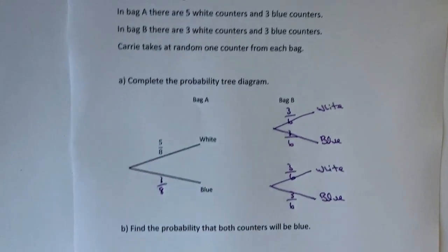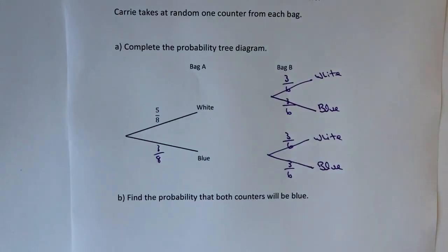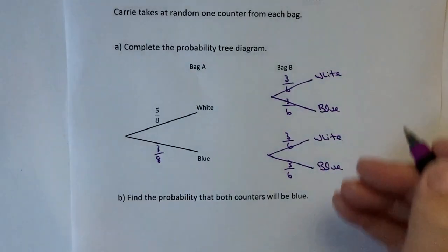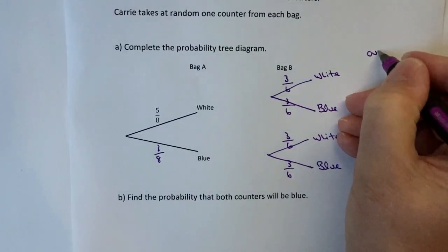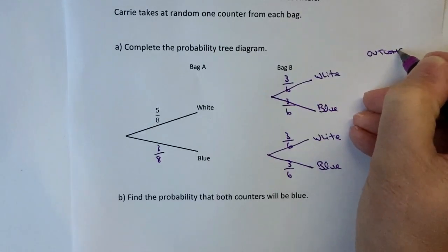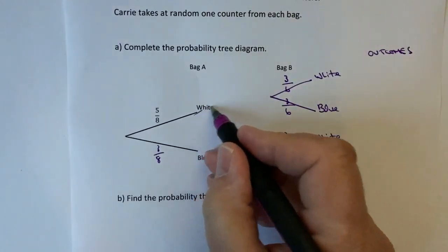The next part of the question is find the probability that both counters will be blue. In order to do that what we need to do firstly is look at the actual outcomes. The advantage of having these sorts of diagrams is it's relatively straightforward to follow the branches through.